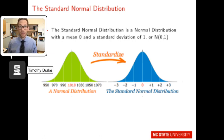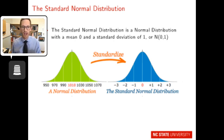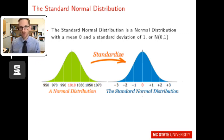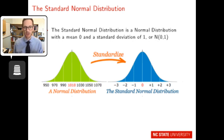Notice we have two normal distributions here. The green distribution has a mean of 110 and a standard deviation of 20 — this is not standardized; it might represent SAT scores. By applying the z-score formula, you create a new curve called the standard normal distribution, represented by a mean of zero and a standard deviation of one, shown in blue. We've standardized the left distribution to create the right distribution with mean zero and standard deviation one.